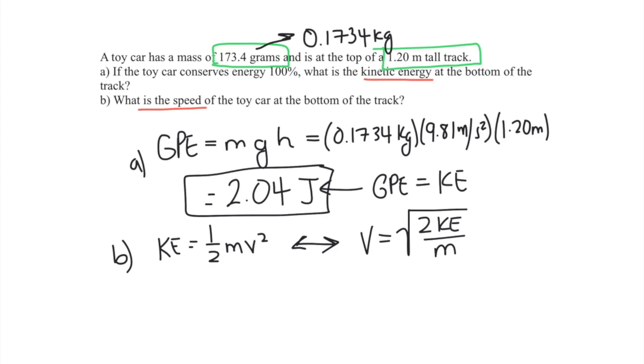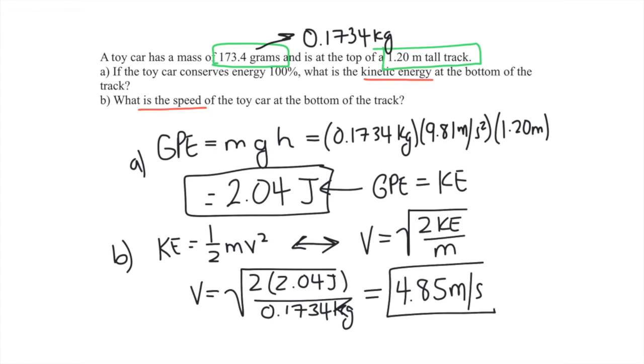We can plug in now our kinetic energy which we solved for in part a. We have two times 2.04 joules over the mass which is 0.1734 kilograms. When we plug that into our calculator we get an answer of 4.85 meters per second. That would be the speed of this car as it got to the bottom of the track.